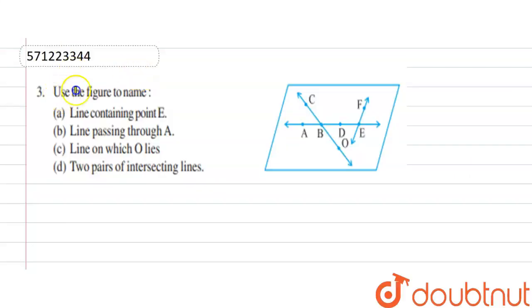Hello guys, the question is use the figure to name: A) line containing point E, B) line passing through A, C) line on which O lies, D) two pairs of intersecting lines.